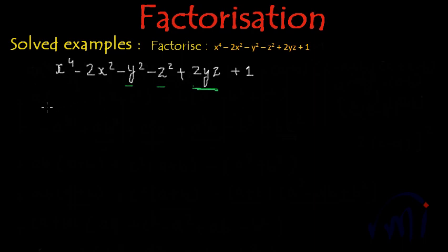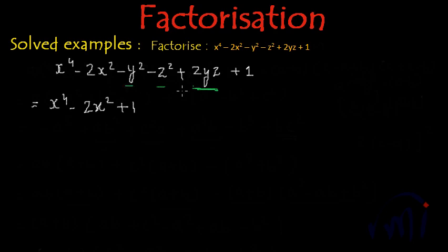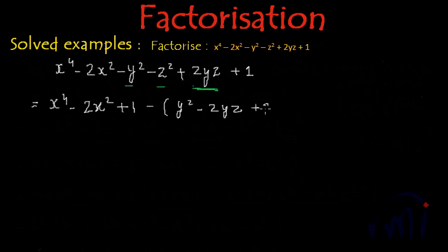This expression can be rewritten as x to the power 4 minus 2x squared plus 1. And if I take minus common from these three terms, this can be written as minus y squared. This 2yz becomes negative because we took a minus sign common, so plus 2yz becomes minus 2yz, and minus z squared becomes plus z squared.